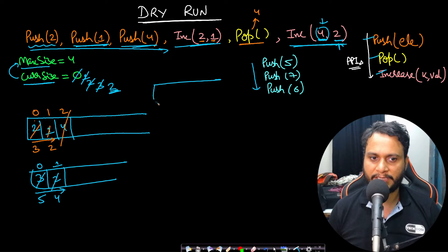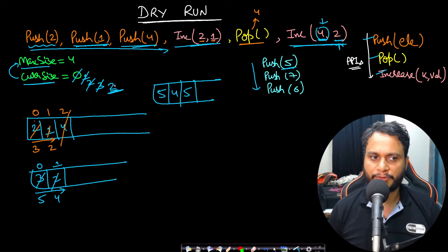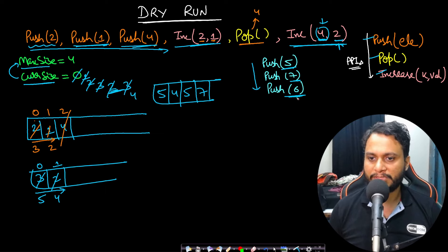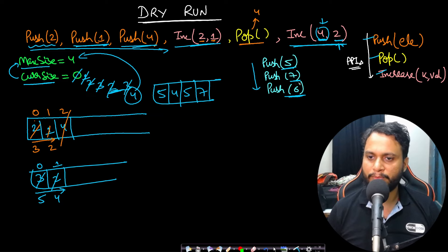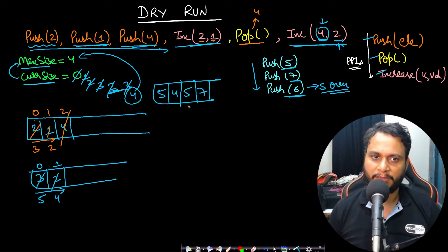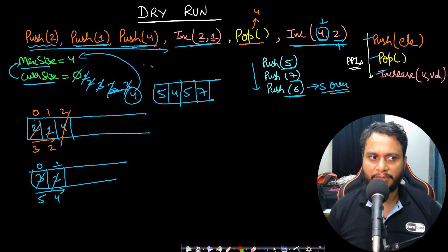With the stack at [5, 4] and current size 2, push 5 is added and size increases. Push 7 is added and size increases to 4. When push 6 comes, current size already equals max size, so it cannot be pushed — we return stack overflow and the item is not inserted. This completes the entire dry run.